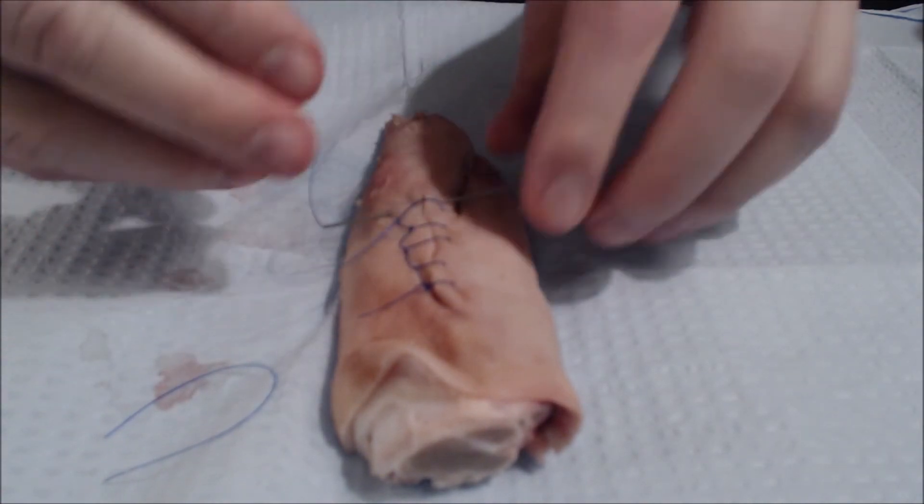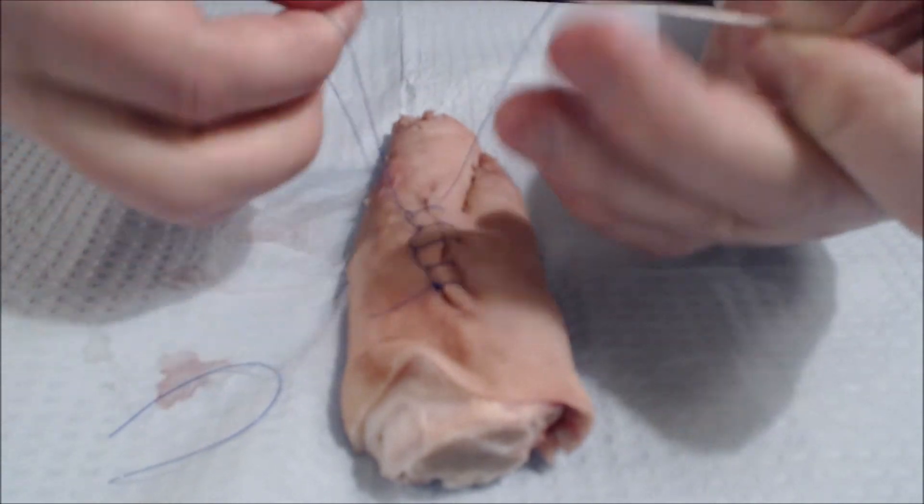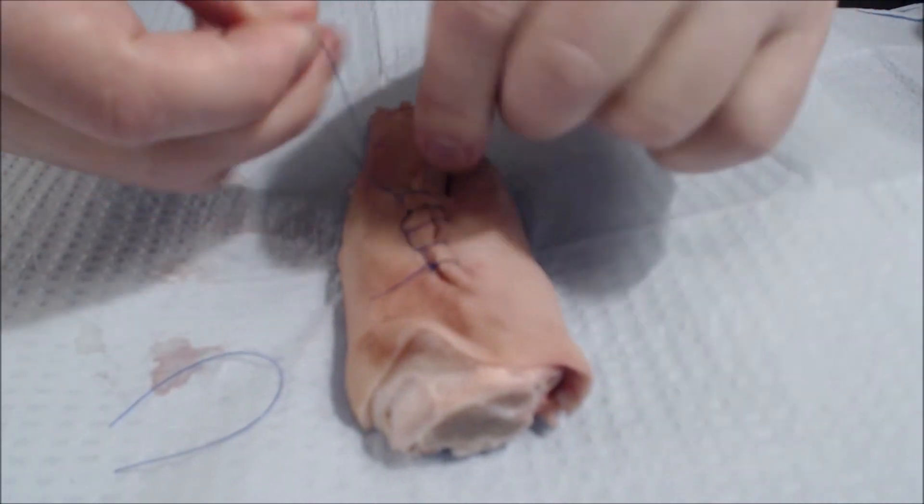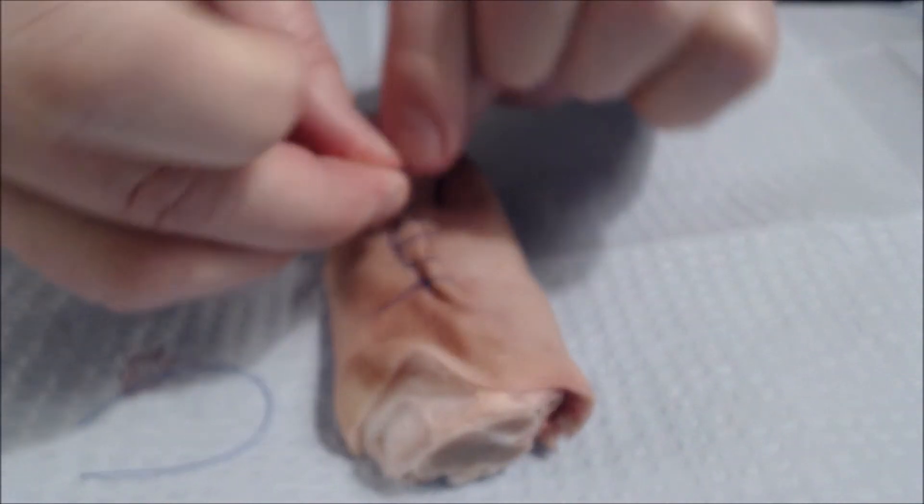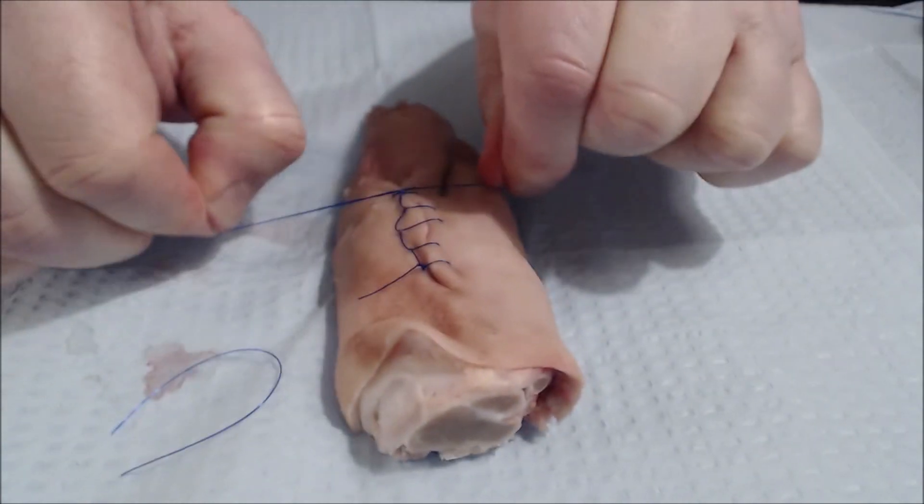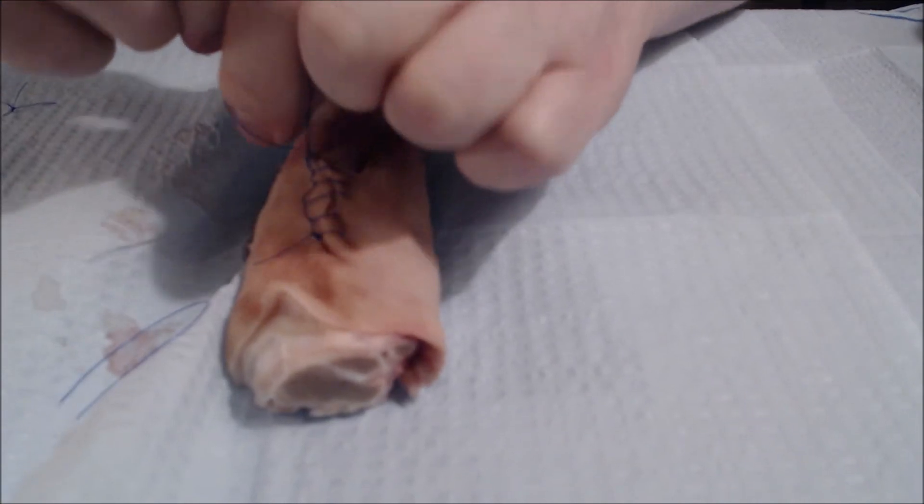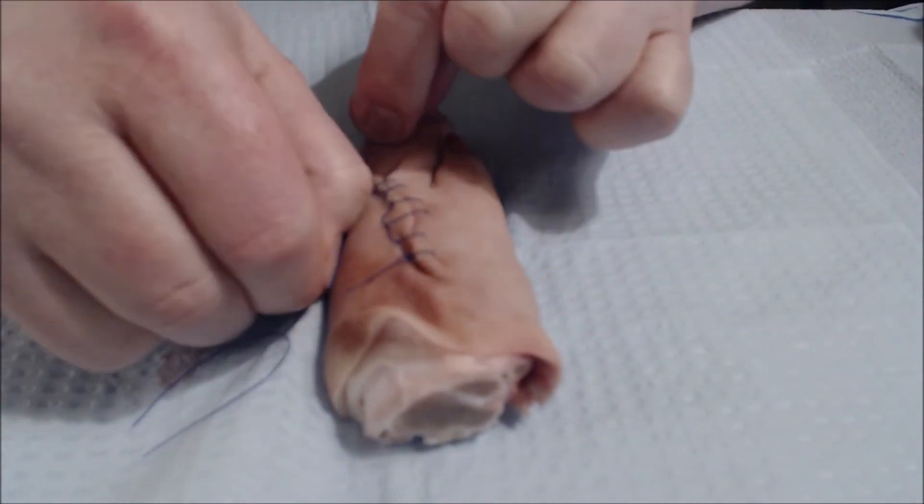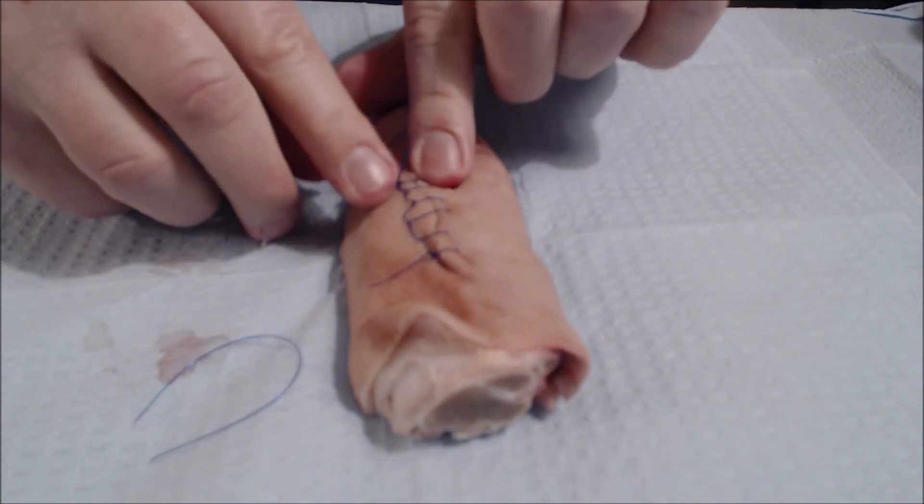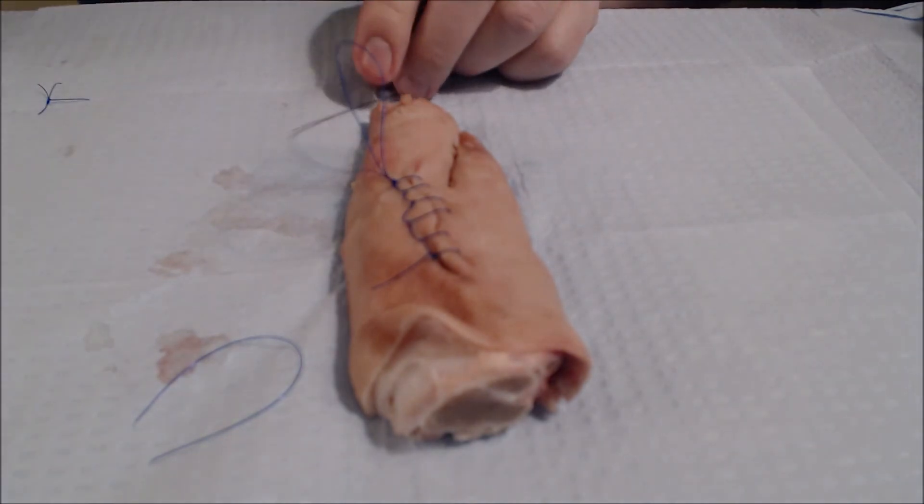We don't bring the needle through the loop necessarily, but we do tie it. Here our needle is getting a little short. Our suture material is just about all used up. And generally you would do at least four knots.